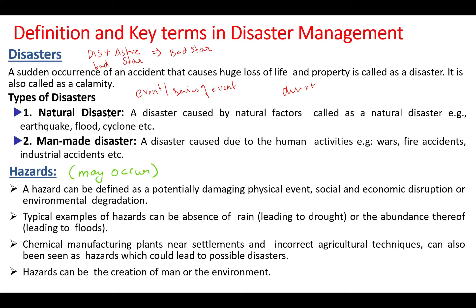Now let us discuss the types of disaster. There are natural disasters and man-made disasters. Natural disasters are caused due to natural factors which happen on the earth — for example, earthquake, flood, cyclone, etc. Man-made disaster is caused by human activity or human negligence; it is also called a human-made disaster. Examples include war, fire accidents, industrial accidents, oil spills, etc.